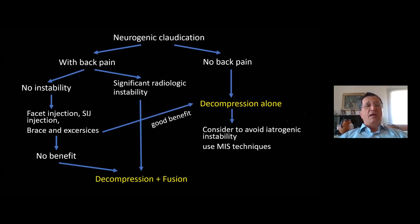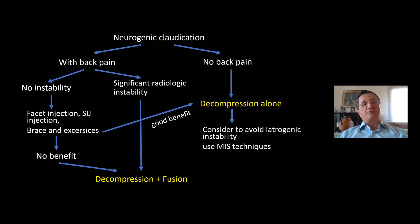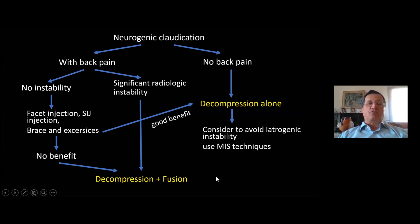This is my algorithm for neurogenic claudication patients. The first question is whether they have back pain. If there is no back pain, consider decompression alone first. If there is back pain and no significant instability, then facet injections, sacroiliac joint injection, brace, and exercises may be good options. If they don't benefit from conservative measures, then consider decompression and fusion. If there is significant radiological instability, decompression and fusion is inevitable.